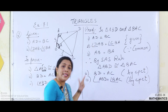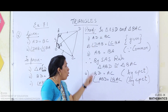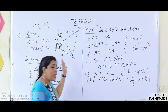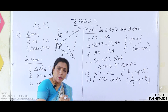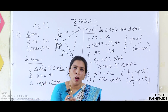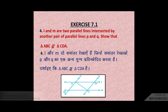That completes question number two — the diagram was a little complicated, but the question itself was very easy. Now let's look at question number four: L and M are two parallel lines intersected by another pair of parallel lines P and Q. Show that triangle ABC is congruent to triangle CDA.